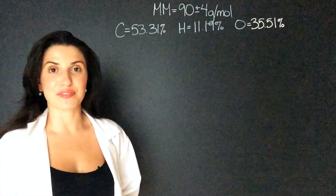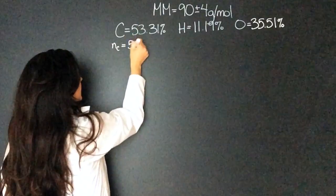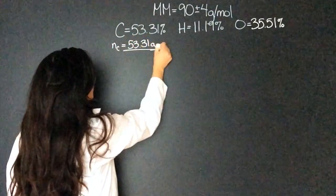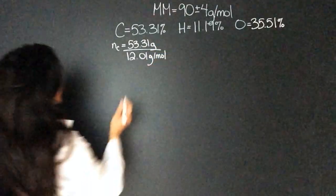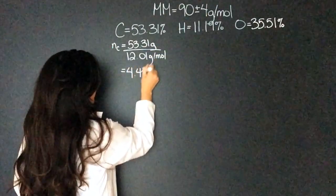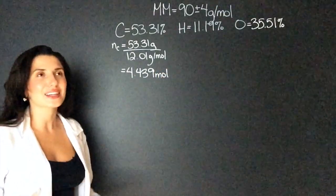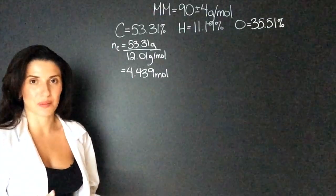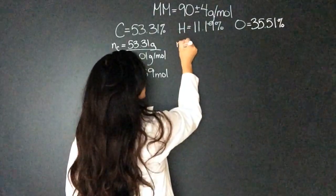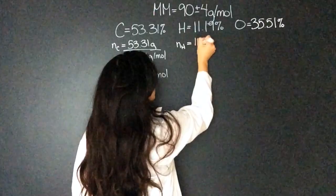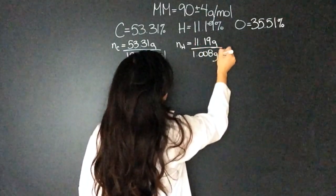So now we can go into finding our mole ratios. So the moles of carbon is going to equal 53.31 grams over the molar mass of carbon, which is on the periodic table, 12.01 grams per mole. That equals 4.439. Now remember, that's a lot of moles. We're not actually dealing with moles that are in an experiment. We're just dealing with the ratios. So that's why that number is so big. Next, the moles of hydrogen are 11.19 grams divided by 1.008 grams per mole.